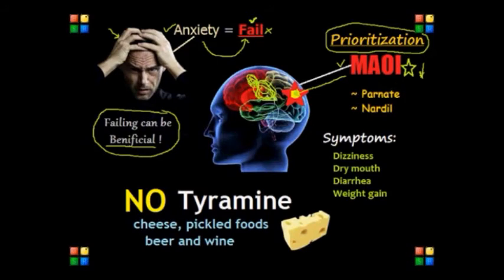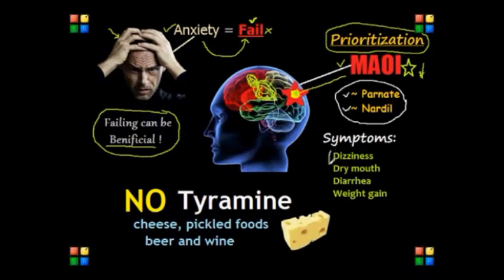The two most important MAOI drugs you might encounter on the NCLEX are Parnate (tranylcypromine sulfate) and Nardil (phenelzine sulfate). The most common symptoms for these drugs include dizziness, dry mouth, and diarrhea — the three D's — as well as weight gain.